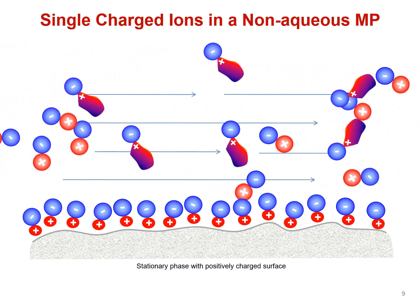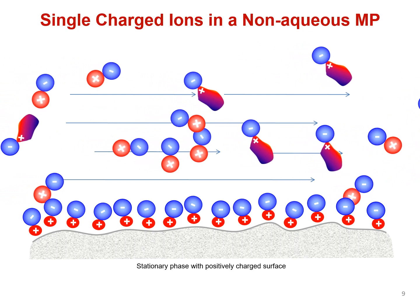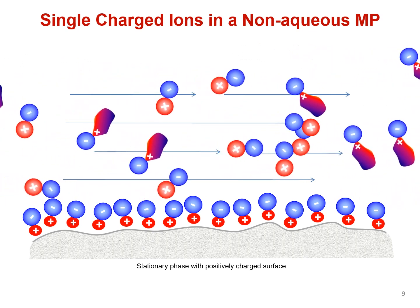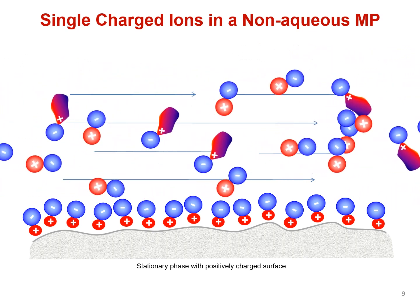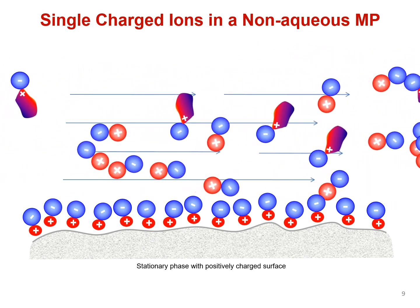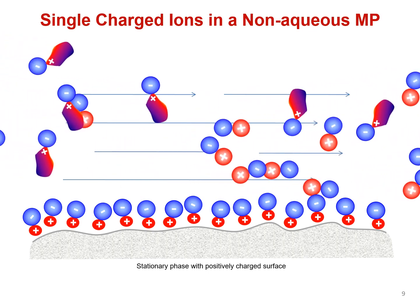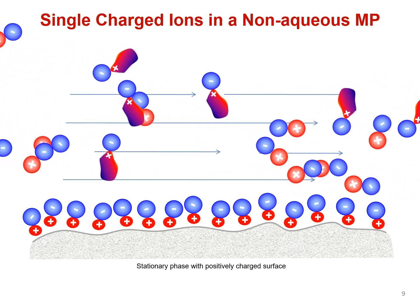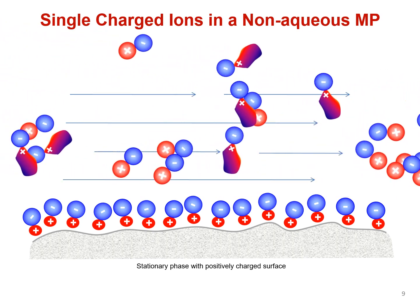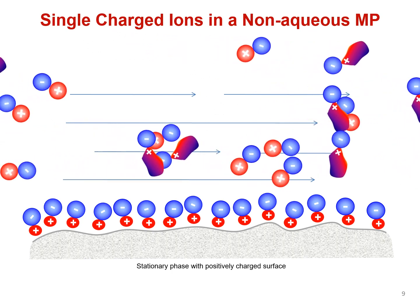If the amount of aqueous mobile phase starts to decrease by replacing water with a miscible organic solvent like acetonitrile, then the solvation layer around each ion starts to deplete. But if the buffer ion has only one charge, then the analyte and buffer ion form a net neutral type pair and will not participate in the electrostatic interaction with the stationary phase.